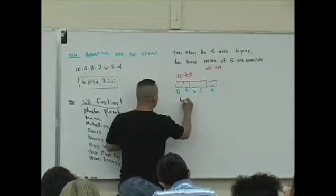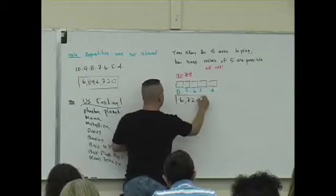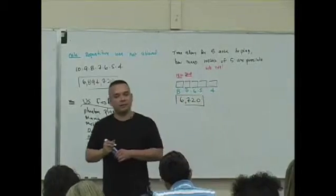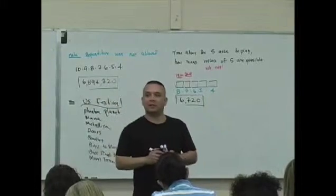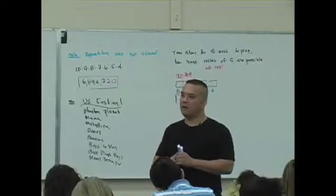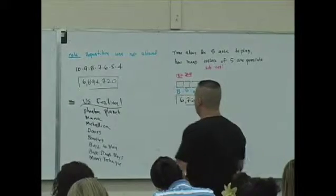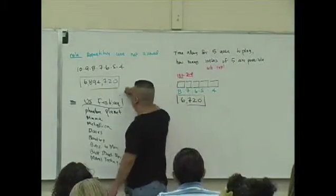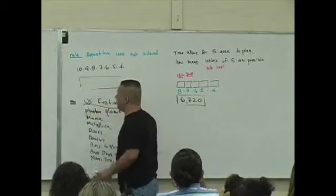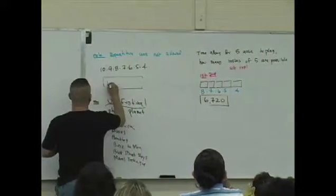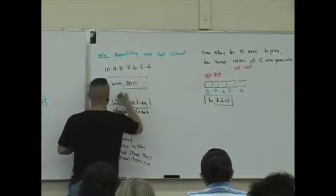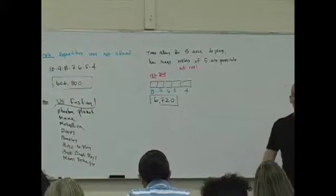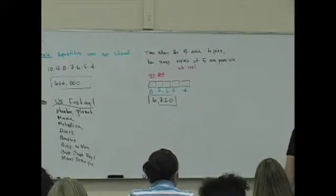So what is that eight times seven times six times five times four? What is that value? Six thousand seven hundred and twenty? Six thousand seven hundred and twenty different rosters of five. Yes. Oh, that's ten, nine, eight, seven, six, five, four? Six hundred and four thousand eight hundred?